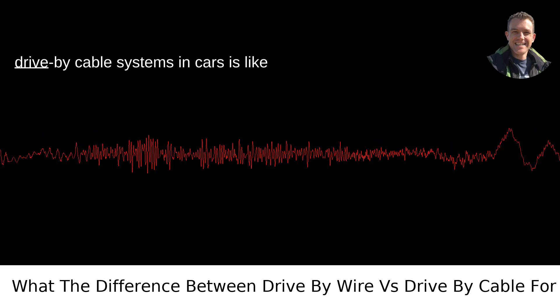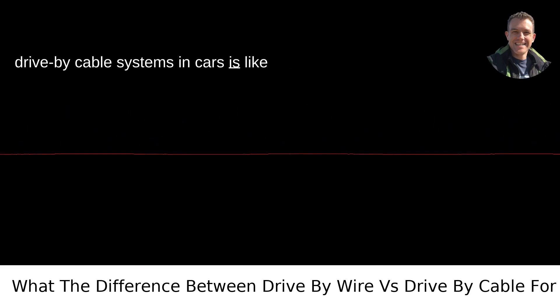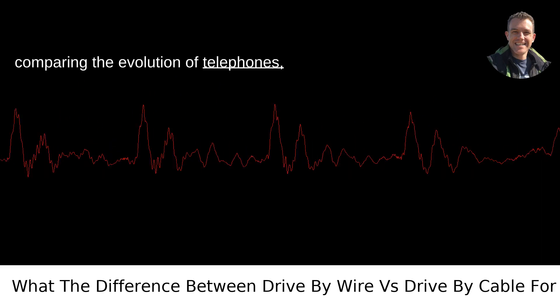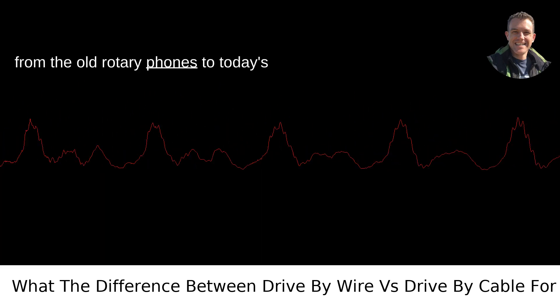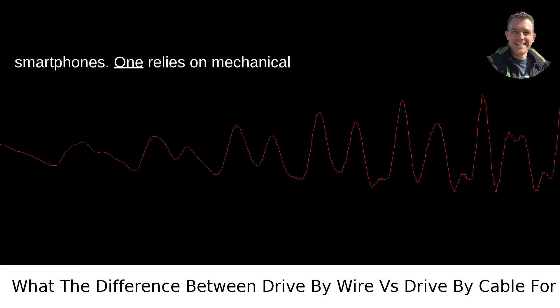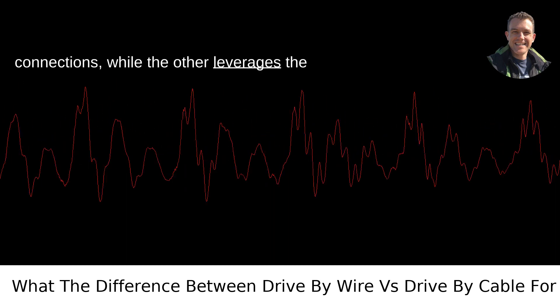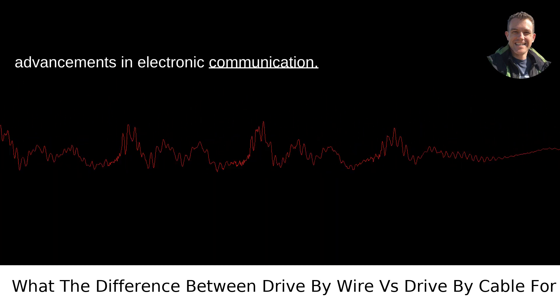The difference between drive-by-wire and drive-by-cable systems in cars is like comparing the evolution of telephones, from the old rotary phones to today's smartphones. One relies on mechanical connections, while the other leverages the advancements in electronic communication.